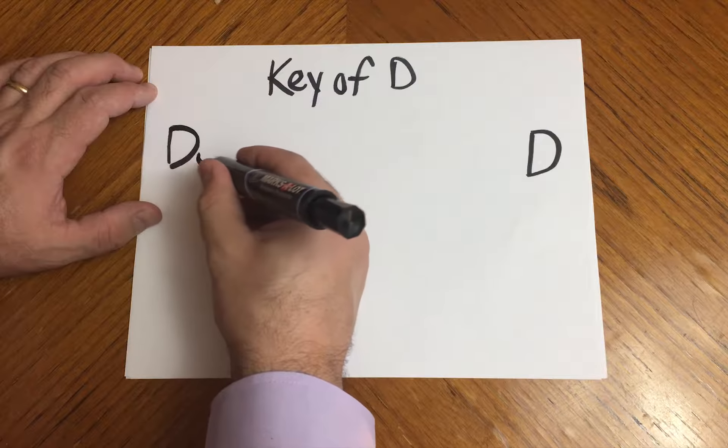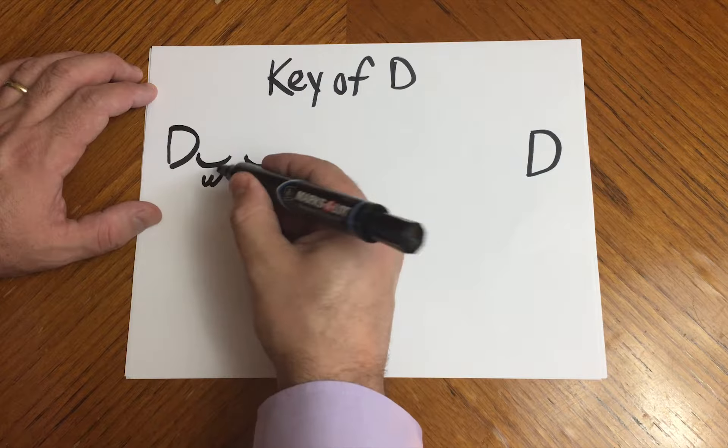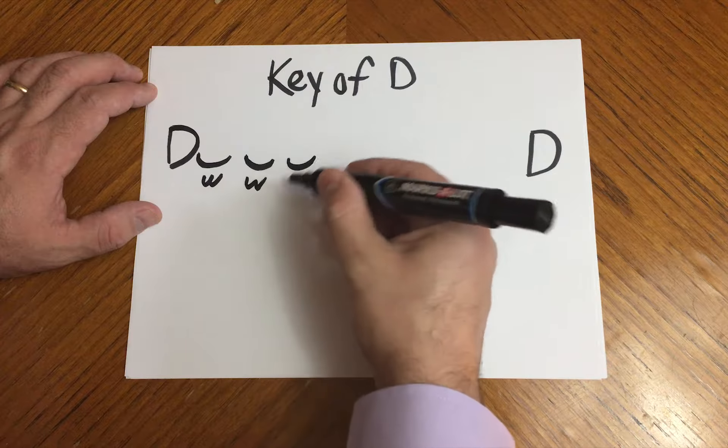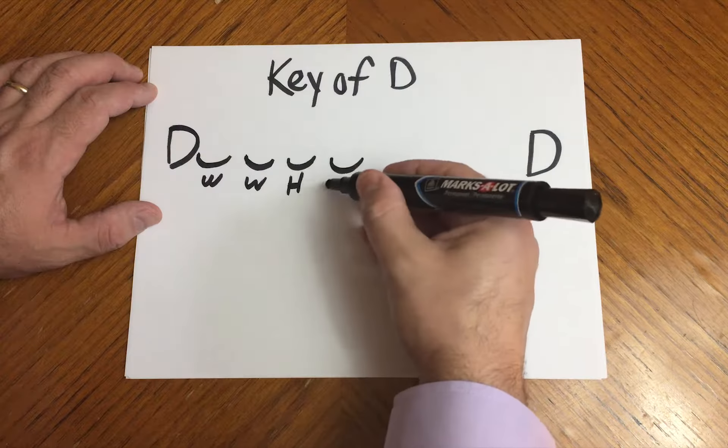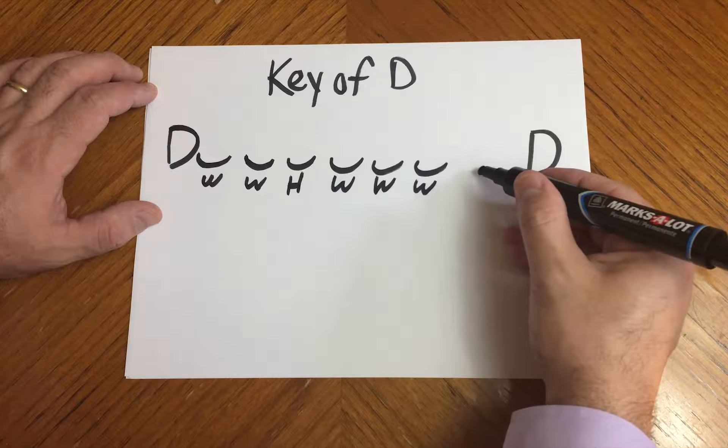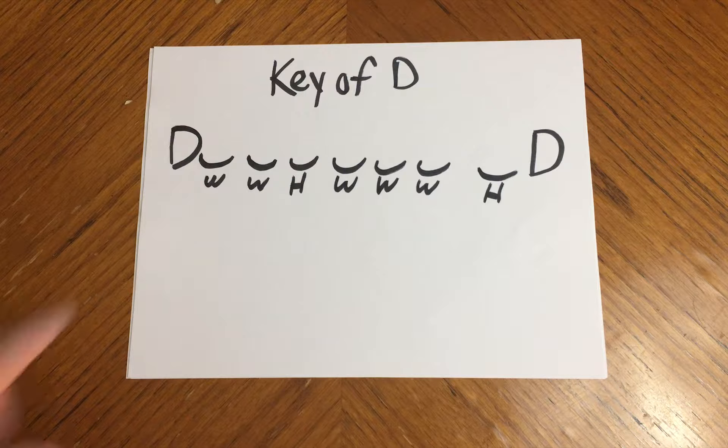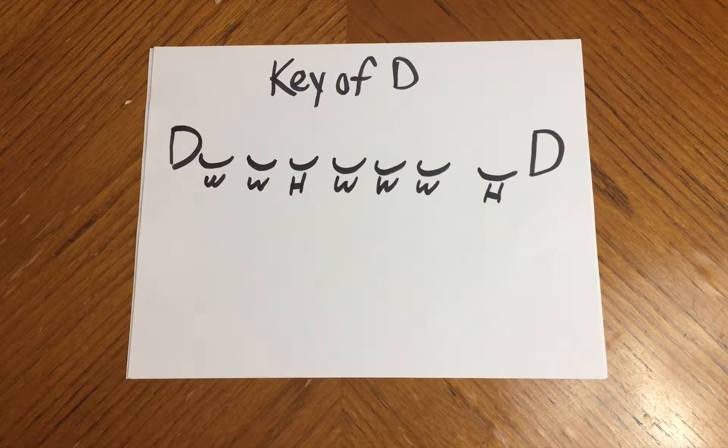And then we said to build out the major scale we have a whole step, a whole step, a half step, and three whole steps, and then another half step. And that's what gives us the intervals to build out the notes that are in the key.